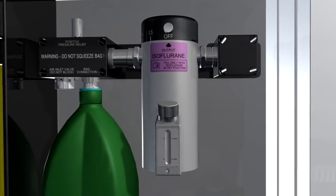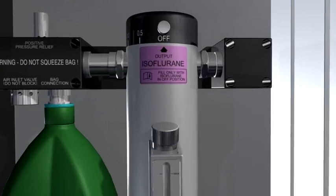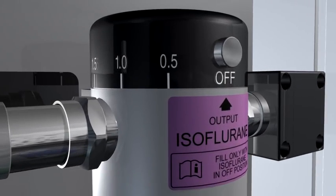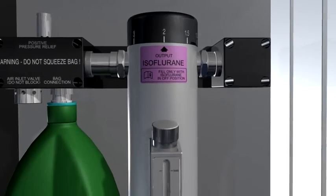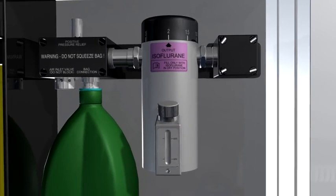The low resistance draw over vaporizer adds volatile agent to the carrier gas passing through it. Volatile agent is added by using the selector wheel to achieve the desired percentage. We now have anesthetic gas comprising oxygen, volatile agent, and a variable amount of room air.